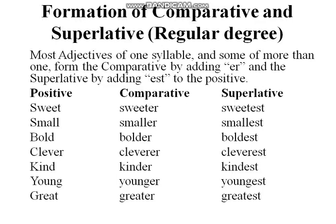Now look at the formation of comparative and superlative degrees. Such degrees can be formed from the positive degree, and they can also be called regular degrees because the positive word is regularly repeated in comparative and superlative. Most adjectives of one syllable form the comparative by adding '-er' and the superlative by adding '-est' to the positive.